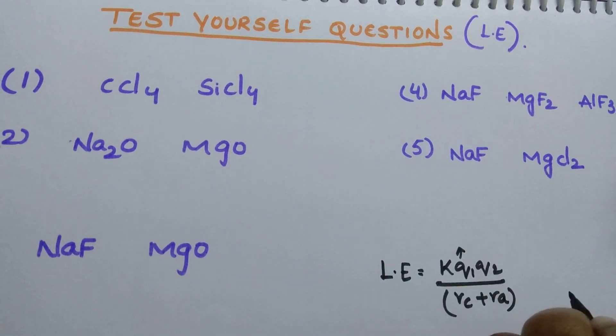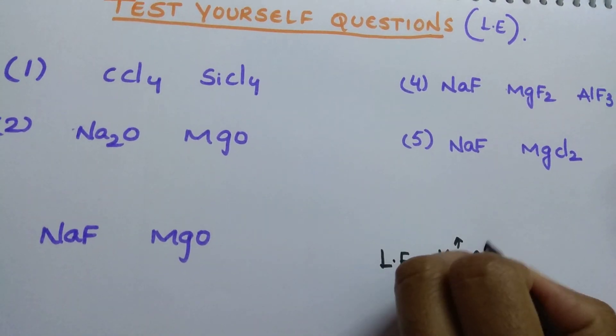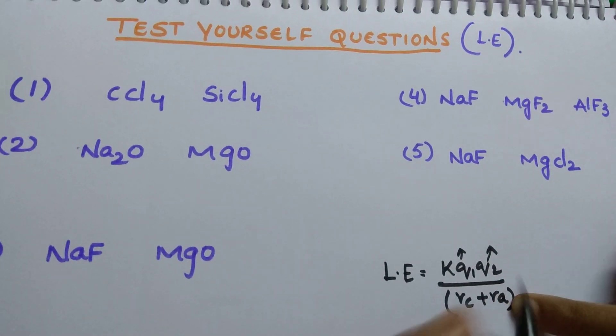What is the Q1? Charge on cation. Q2? Charge on anion. Radius of cation, radius of anion.